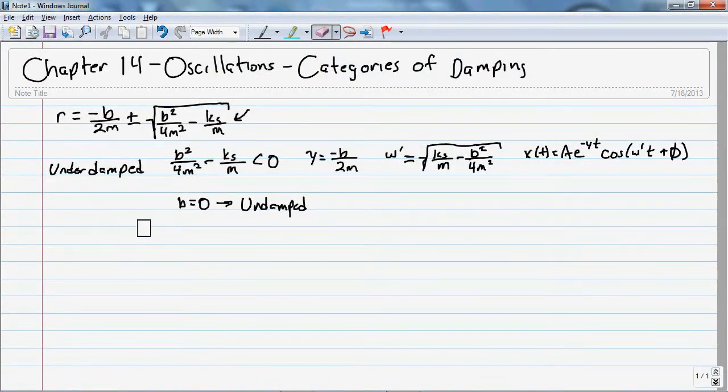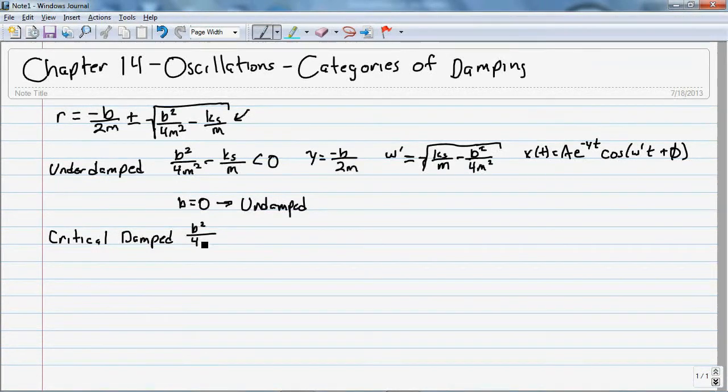Our second case is called critical damped. And in this case, our determinant is b squared over 4m squared minus k of the spring over m is equal to 0, and here we're going to have a double root.